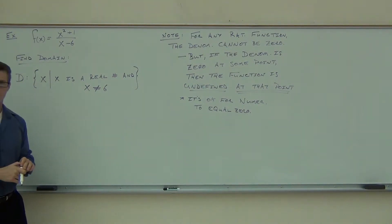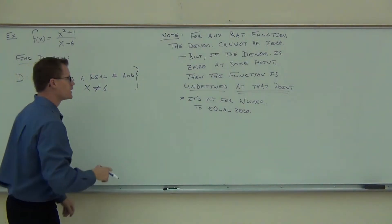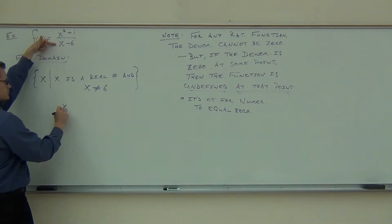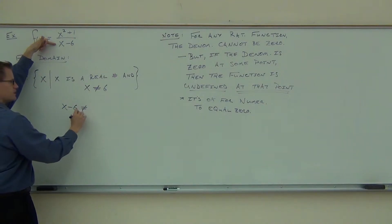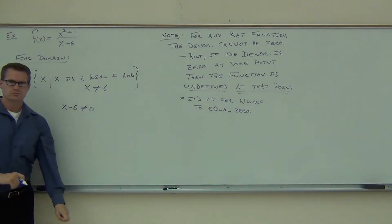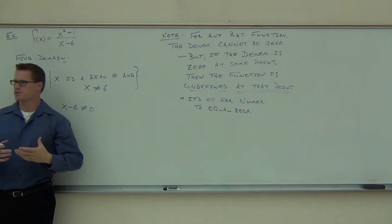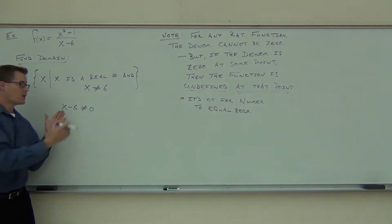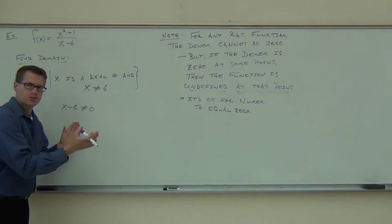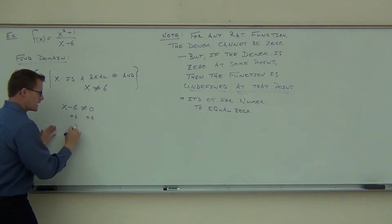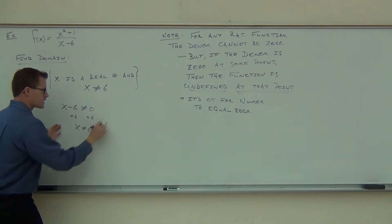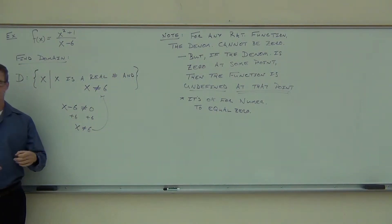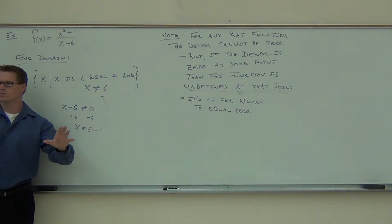One way you can show your work on this without having to just think about it: you take your denominator and set it not equal to zero. Why? Because what's the one thing the denominator cannot be? So set it not equal to zero, then you solve it like you would any other equation. You add six to both sides, you get x cannot equal six, and that goes right there. So you just set denominator not equal to zero and solve it.